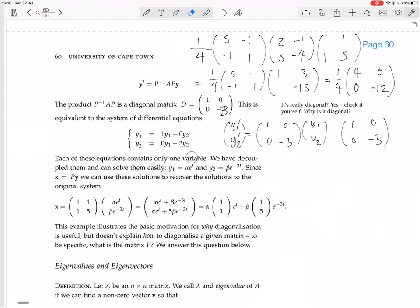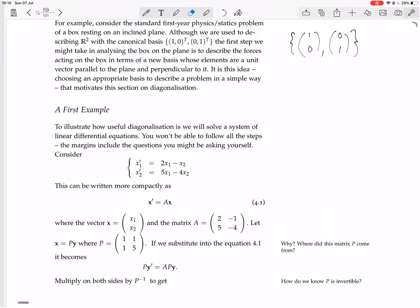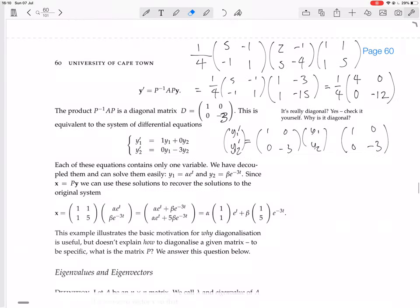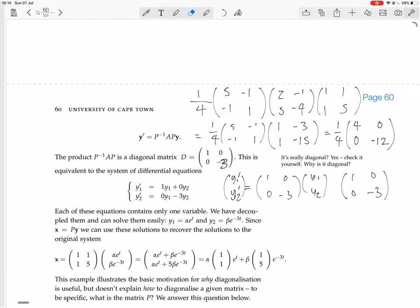Now, each of these equations only contains one variable. So the original system of equations, the derivative of x1 depended on x1 and x2. The derivative of x2 depended on x1 and x2. So that's why that makes it difficult to solve. But now we have y1 dash equals y1. That's an easy thing to solve. This is the solution: e to the t. y2 dash equals minus 3y2. Again, easy to solve. E to the minus 3t.